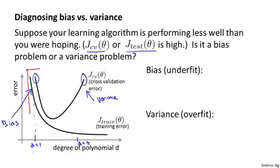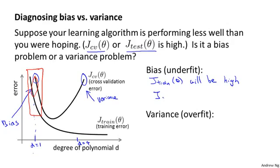Concretely, for the high bias case — that is, the case of underfitting — what we find is that both the cross-validation error and the training error are going to be high. So if your algorithm is suffering from a bias problem, the training set error will be high, and the cross-validation error will also be high, maybe just slightly higher than the training error. If you see this combination, that's a sign your algorithm may be suffering from high bias.